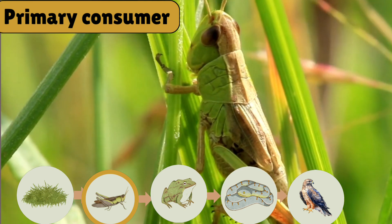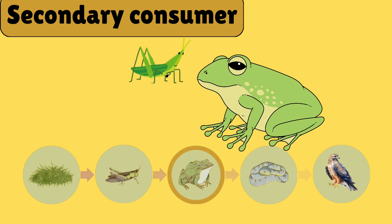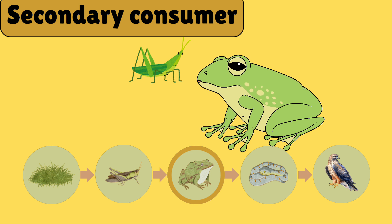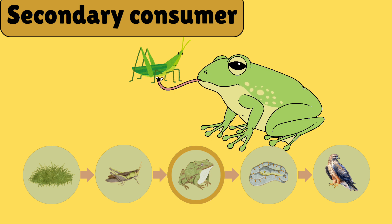Next, coming to the secondary consumer. As we see in the picture, the secondary consumer is a frog. It's the third trophic level. The secondary consumer feeds off the primary consumer. Here, the primary consumer is a grasshopper. In this food chain, the secondary consumer is a frog and the primary consumer is a grasshopper — frog eats grasshopper.